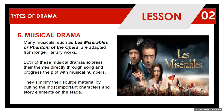Both Les Misérables and The Phantom of the Opera express their themes directly through song and progress the plot with musical numbers. They simplify their source material by putting the most important characters and story elements on stage. The original literary works are very long and take quite some time to fully understand. When adapted into musical dramas, the main characters and most essential elements of the story are placed at center stage, emphasizing the totality of the character, the totality of the plot, and the different elements of the story without unnecessarily complicating what is being portrayed.